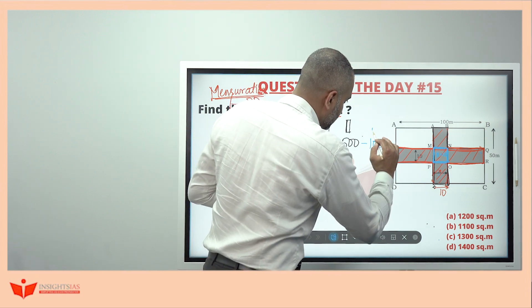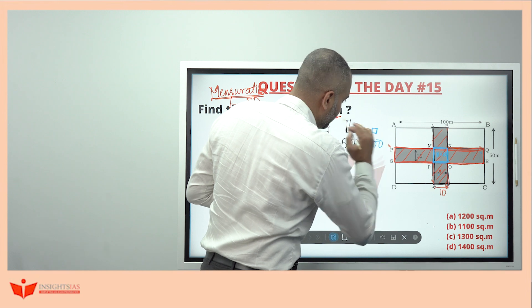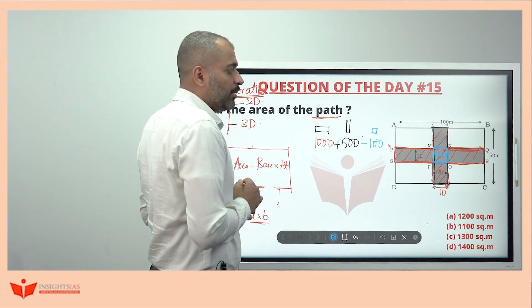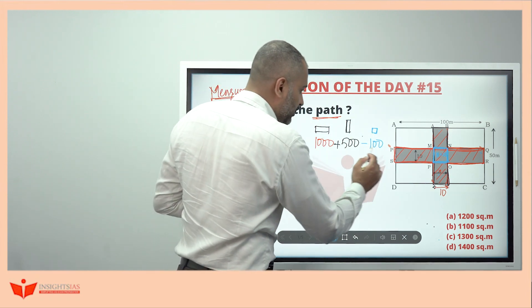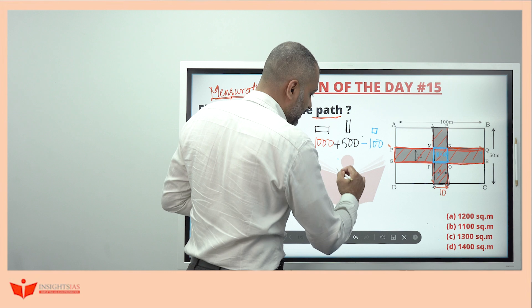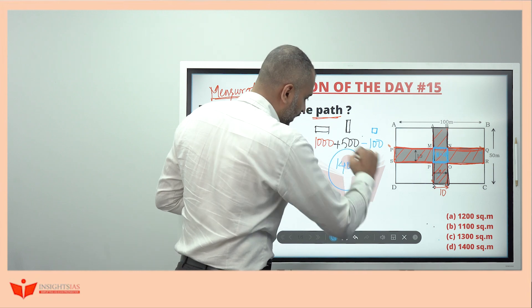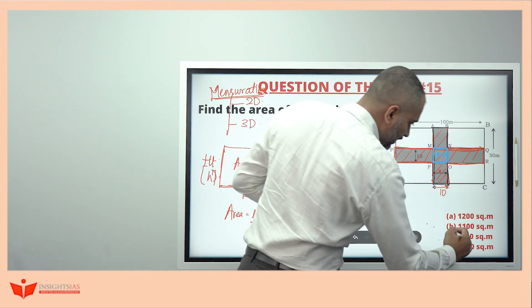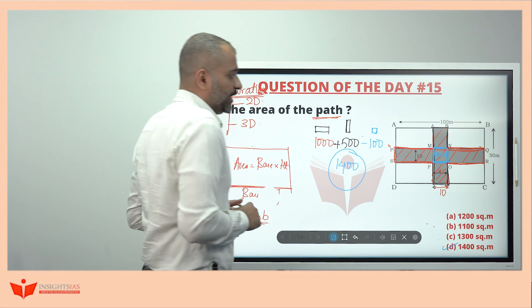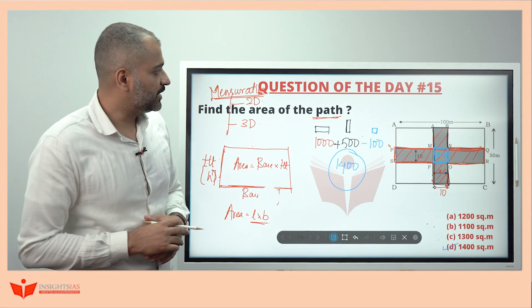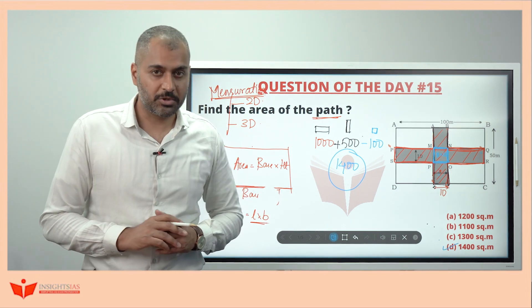So this is 1500 minus 100, that is 1400 square meters. This is the answer for this question.